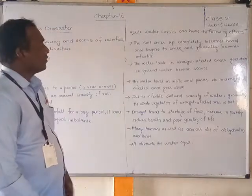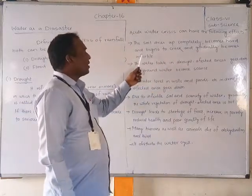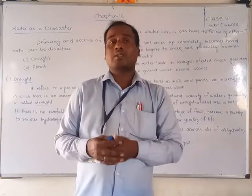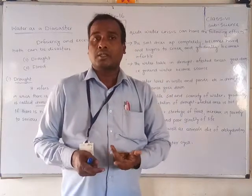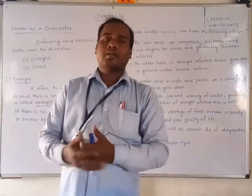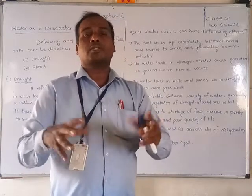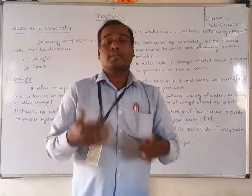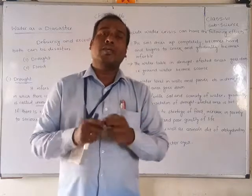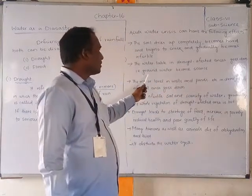Acute water crisis has the following effects. First, the soil dries off completely, becomes hard, begins to crack, and gradually becomes infertile. When there is no rain for long periods, agriculture land needs a large amount of water. Without water, the soil becomes very hard and forms cracks. The fertility of the soil is lost and it becomes infertile.